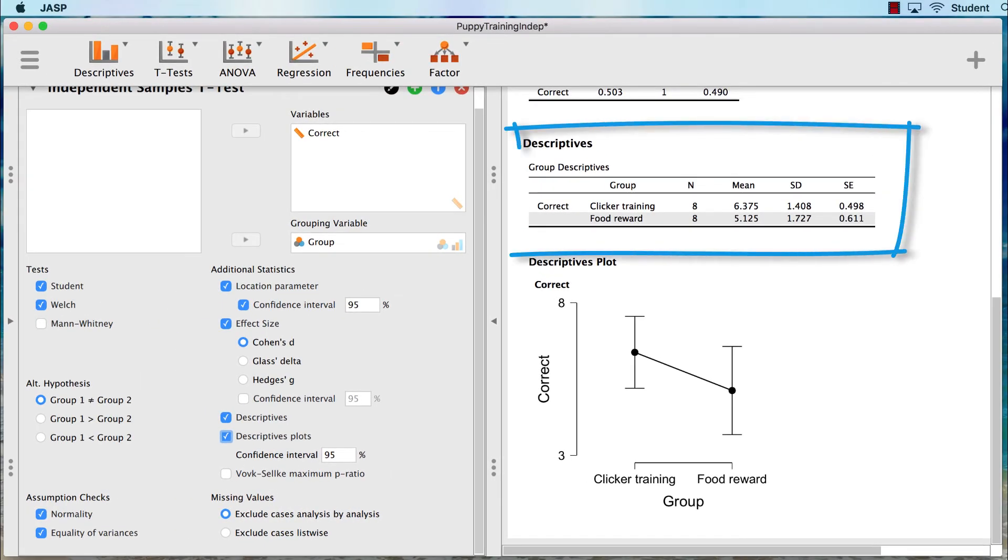I can also see the descriptive statistics for each group. The food group was more than a full point lower than the clicker training group. This will be important to report later. With these thoughts in mind, let's scroll back to the top.